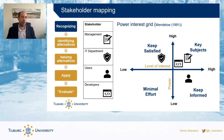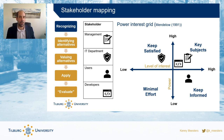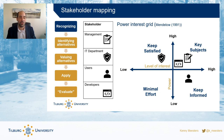Mapping all the groups you're talking to in a power-interest grid will help you identify how much time and energy to invest in each group. Keep in mind that while a single user might not have much power, when multiple users get together their voice becomes stronger and their ability to influence decisions increases. So that's one thing not visible in this diagram — something to keep in mind when groups start collaborating and forming alliances.